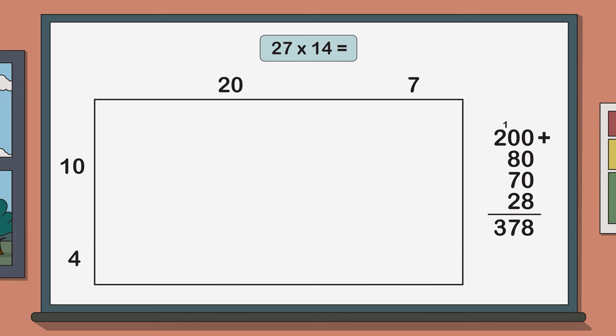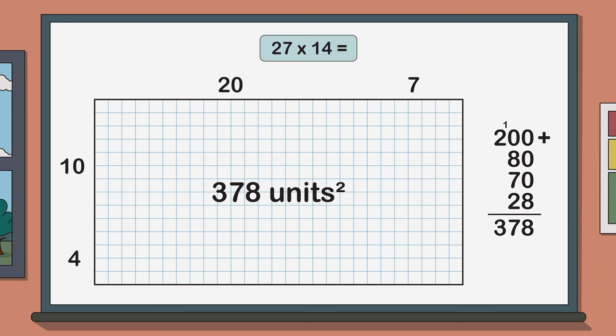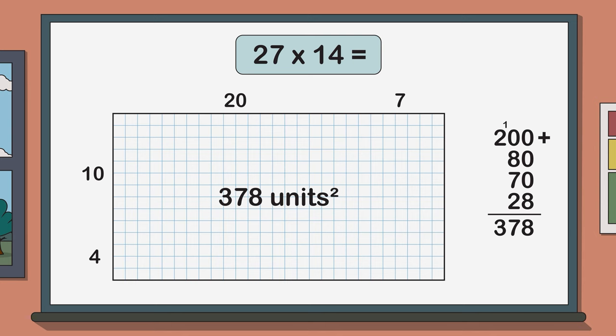Therefore the total area of our rectangle is 378 square units and the answer to our original multiplication problem 27 times 14 is 378 colored pencils.